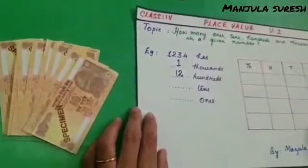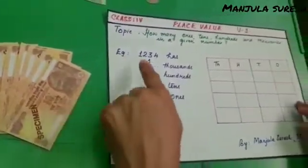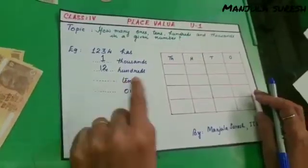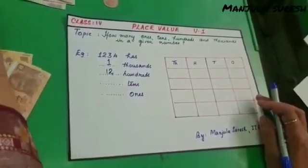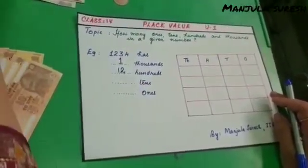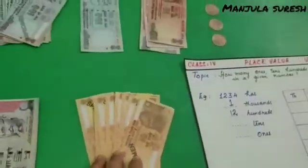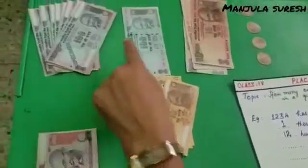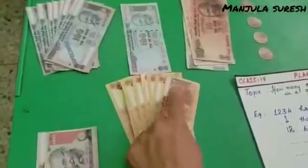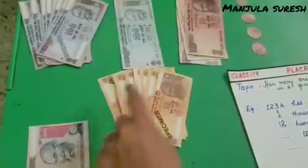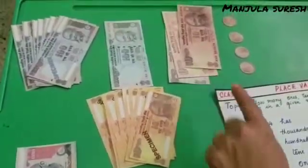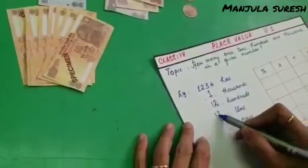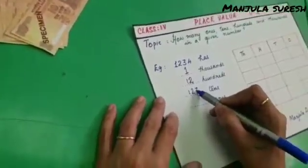Now we have to see this number has how many tens in all. Now I am going to replace the 100 note by tens. So all together we have 120 tens and 3 tens — all together 123 tens.